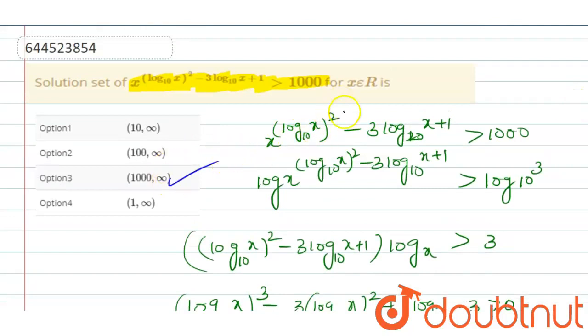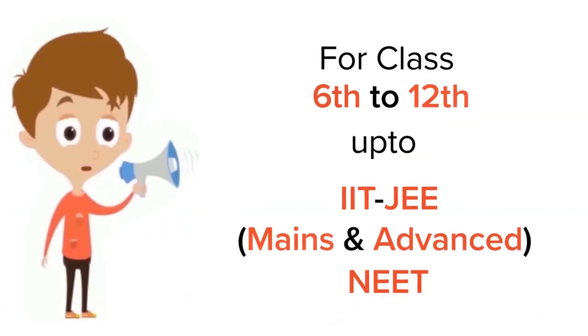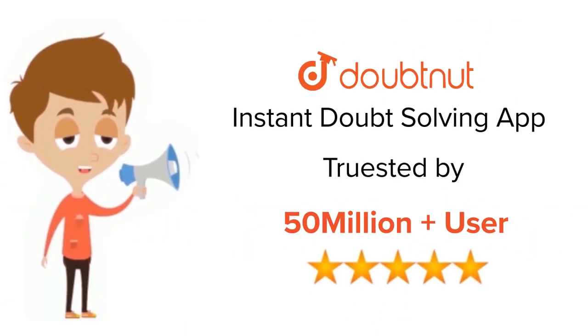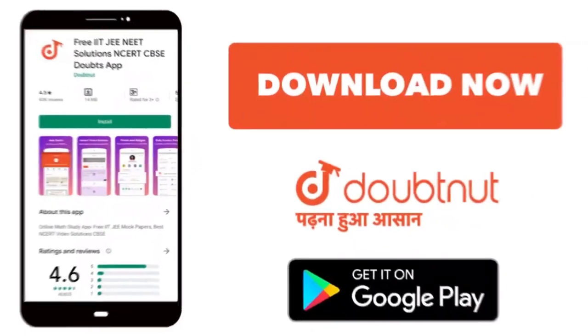Option 3 is the right option. That's it, thank you! For class 6 to 12, IIT-JEE and NEET level, trusted by more than 5 crore students. Download Doubtnut app today.